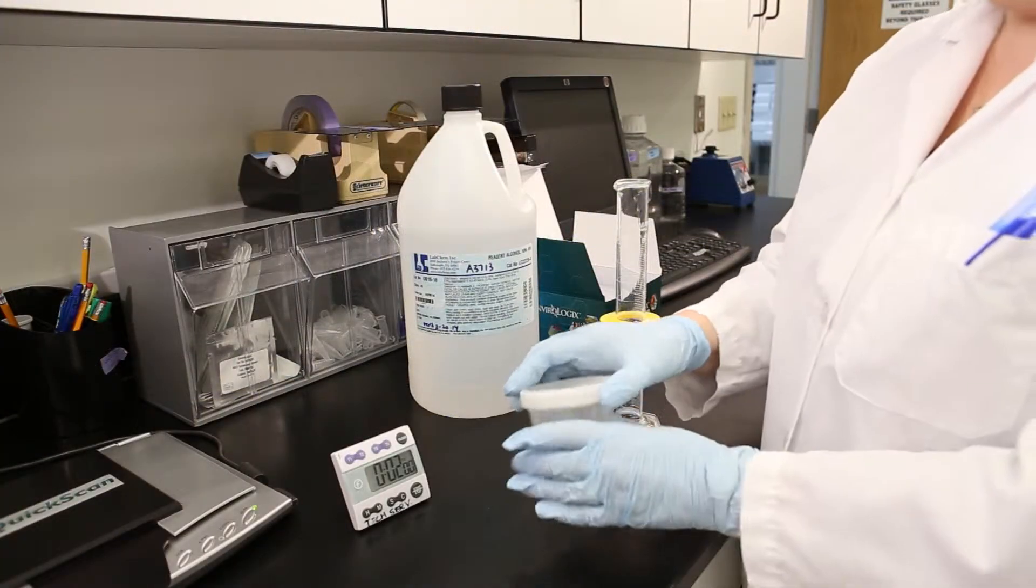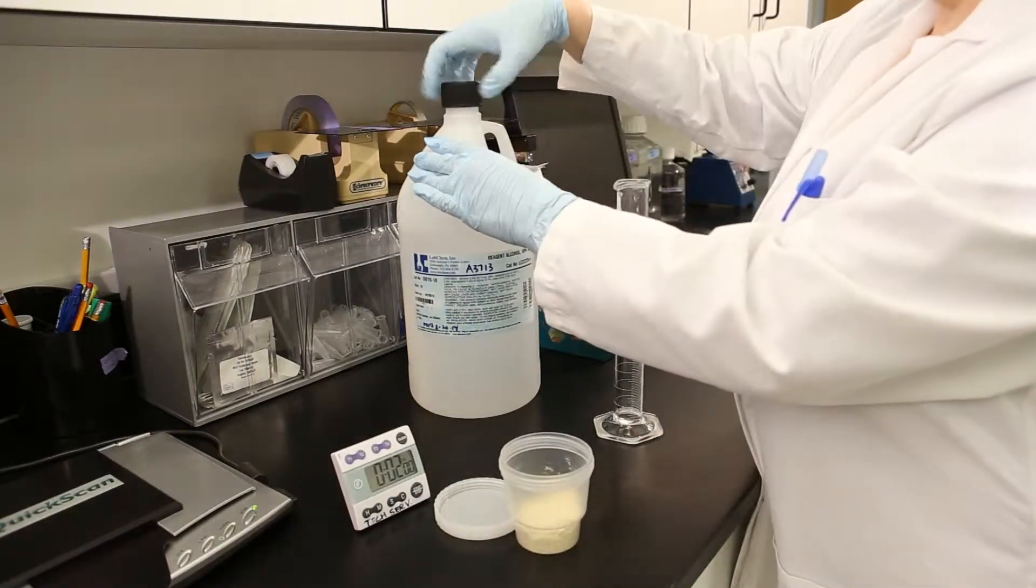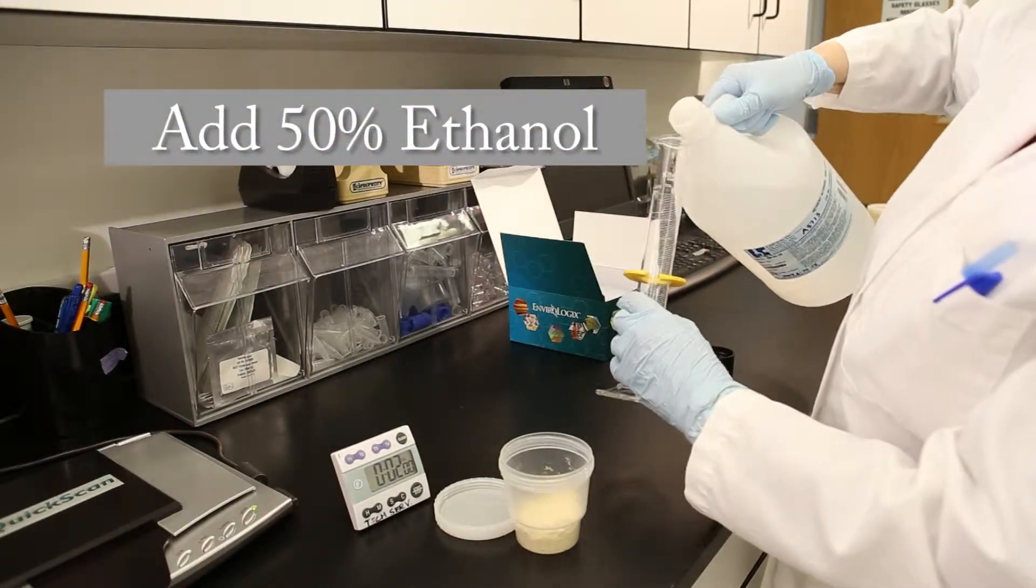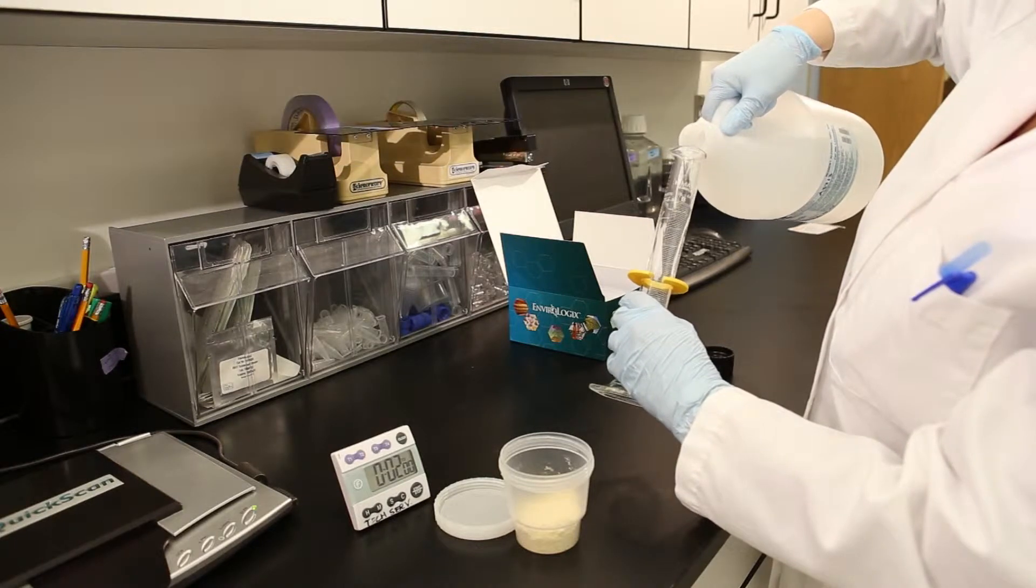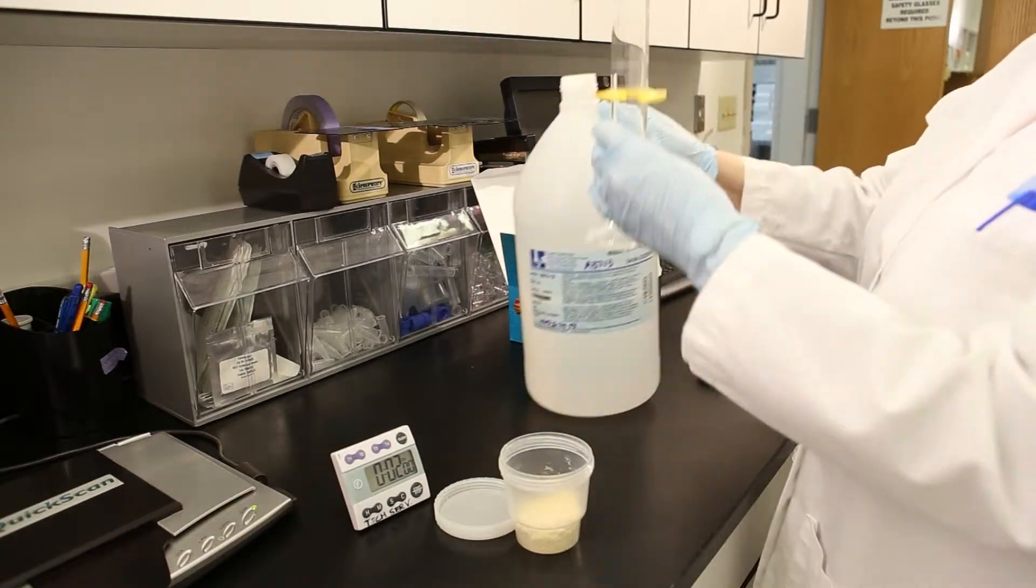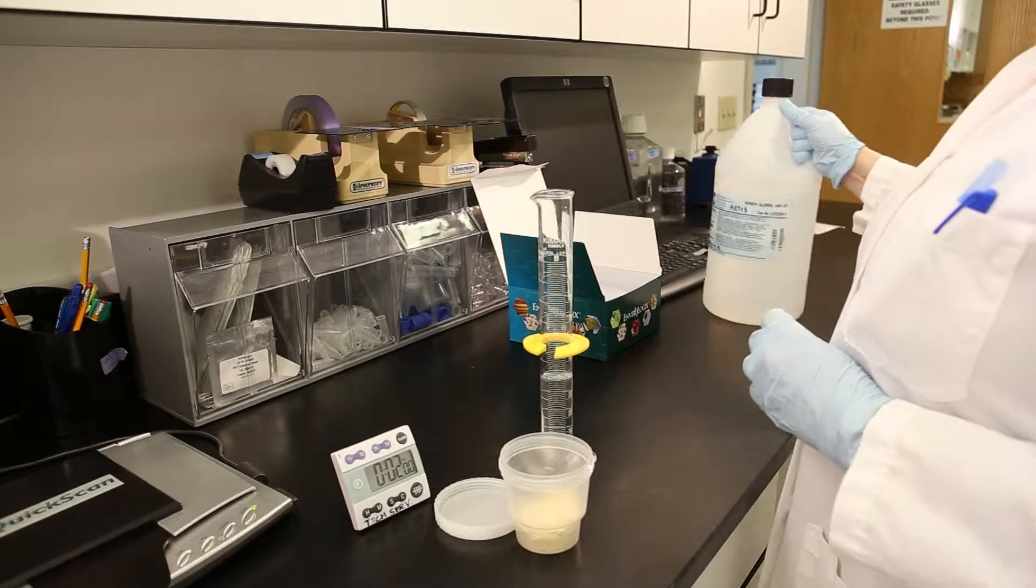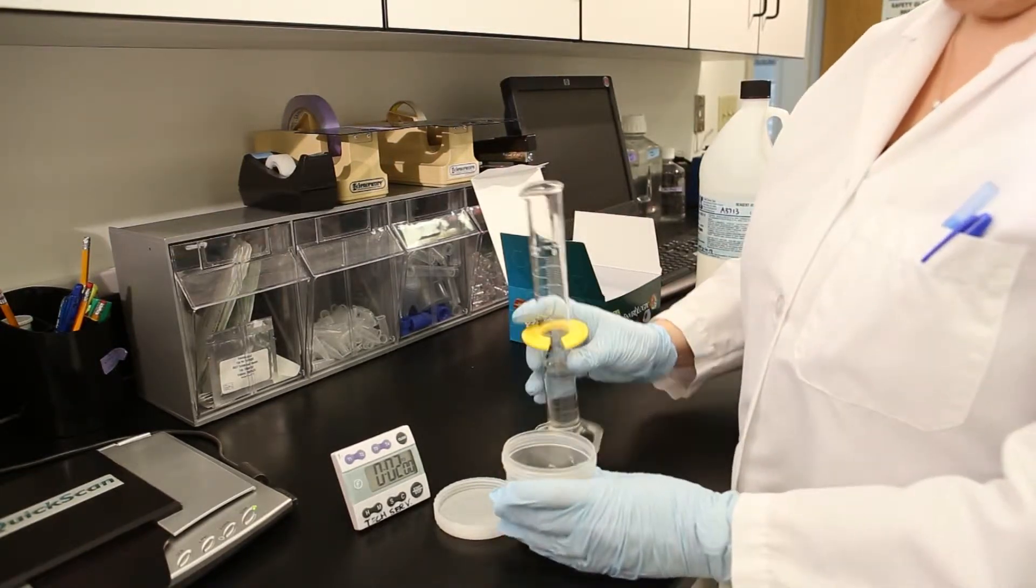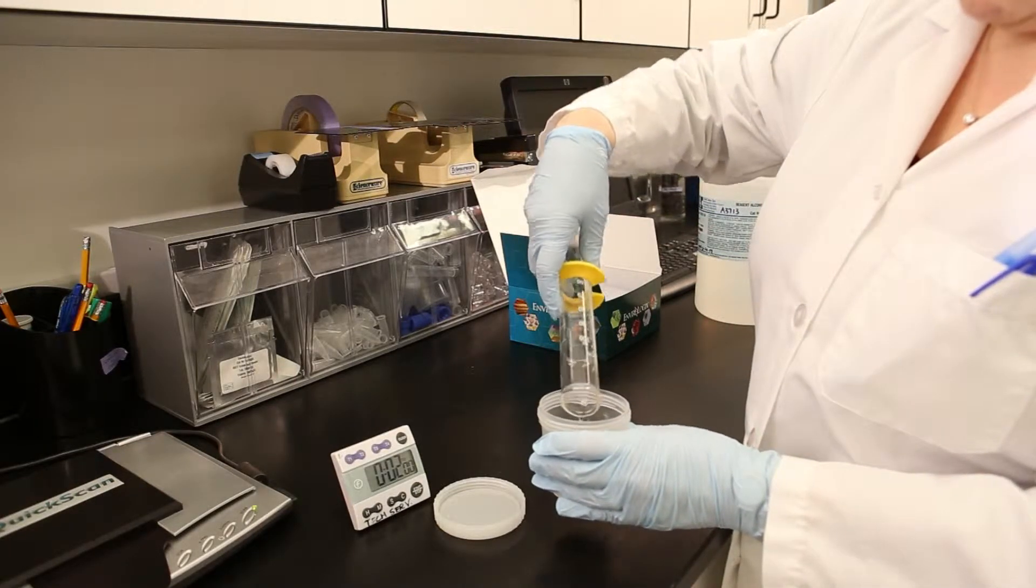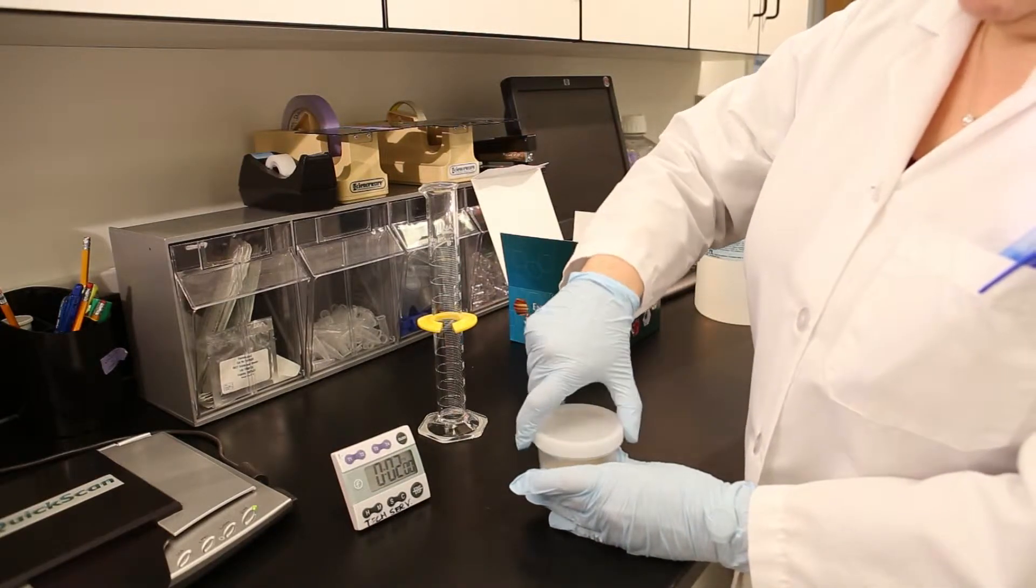To begin, weigh 20 to 50 grams of the milled sample and place in a disposable sample cup. Add two volumes of 50% ethanol to the sample cup according to the instructions in your product insert. Cap the sample cup tightly and wet the sample completely.